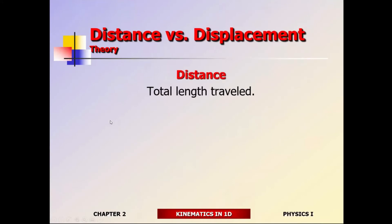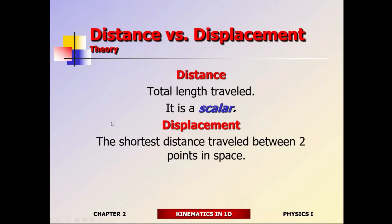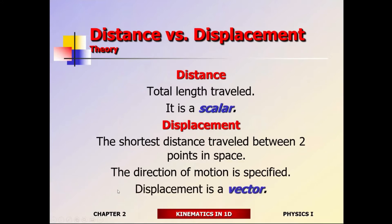So distance is the total path of travel — it's a scalar. Displacement is the shortest distance between two points, with your final location indicated as an arrow — it's a vector. So you've got a scalar and you've got a vector.